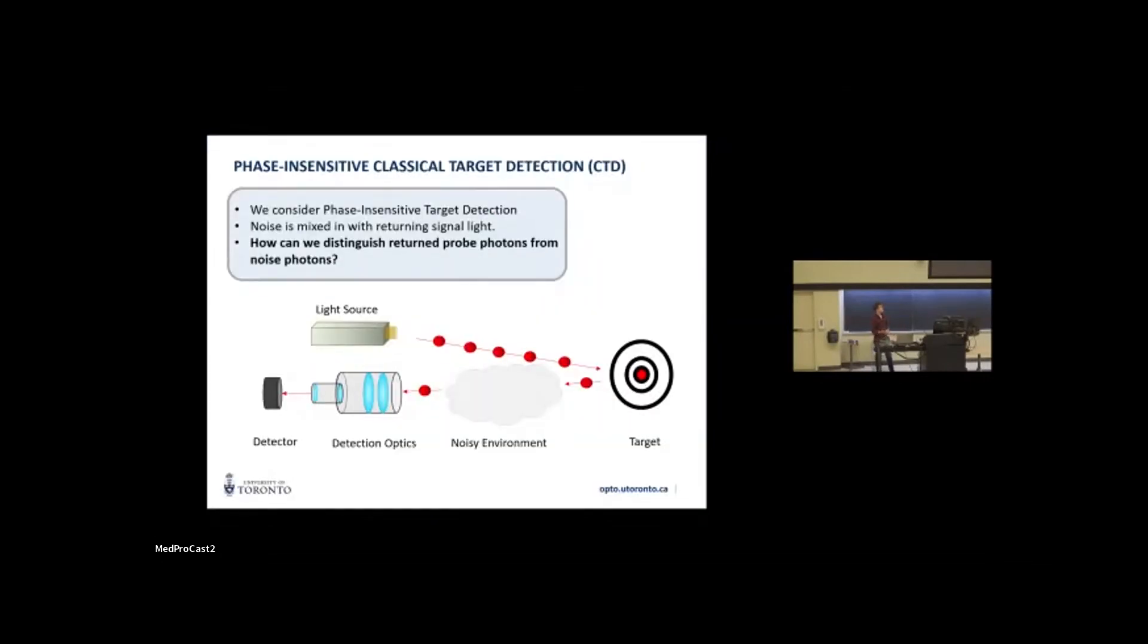I'm just going to introduce the phase insensitive classical detection that we use in sort of a base model and compare all of our results to. So first we consider phase insensitive target detection only. The reason for this is that sort of, if you want to put something on a car or a drone or just detect a drone or detect a car, some moving vibrating target, having a phase sensitive sort of interferometric setup is going to be really difficult because everything's going to have to be phase stabilized to like a wavelength scale. So the approach we take for the classical case is to have a light source that's emitting photon level light going at a target. It's reflected back and mixed with some environmental noise. We then have some detection optics and a superconducting nanowire detector to detect the returning photons.